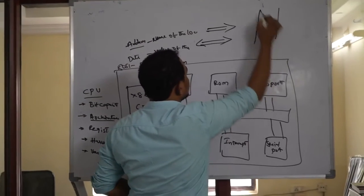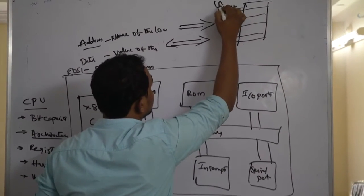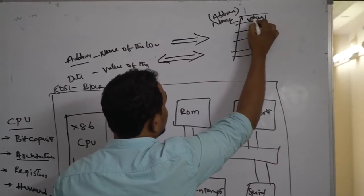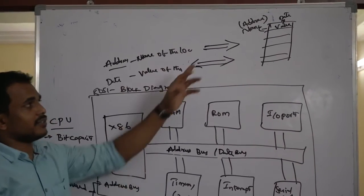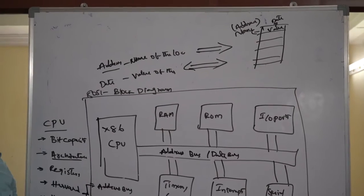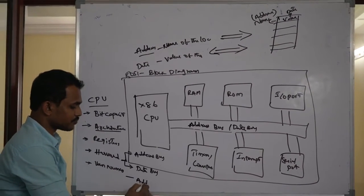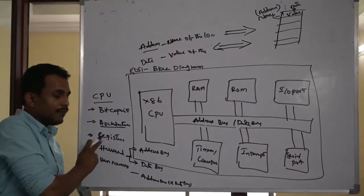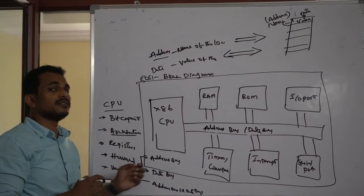To represent this diagrammatically: the name of a location is defined as address, and the value present in that location is defined as data. If you find two different sizes of address bus and data bus, then the architecture is Harvard. In the case of Von Neumann architecture, the address bus and data bus sizes are the same. In Harvard architecture, the two bus sizes are different.